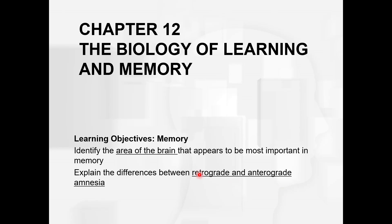In this video, we'll identify the area of the brain that appears to be the most important in memory, which hopefully you remember from the anatomy chapter, and then we'll explain the differences between anterograde and retrograde amnesia.